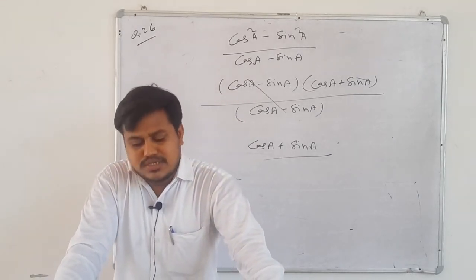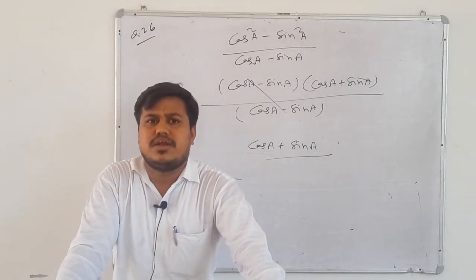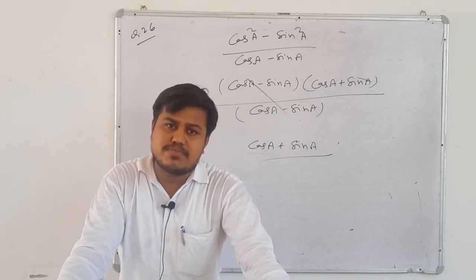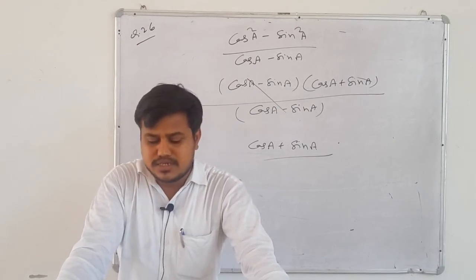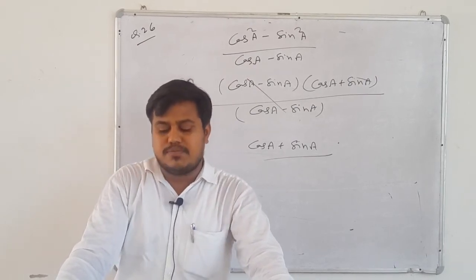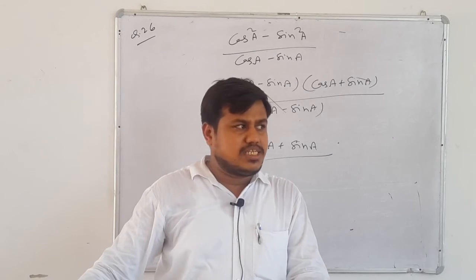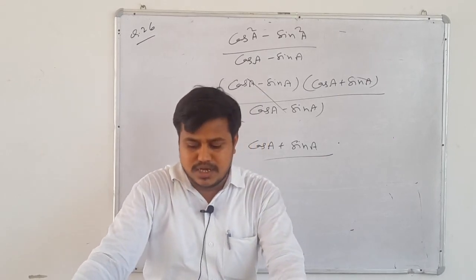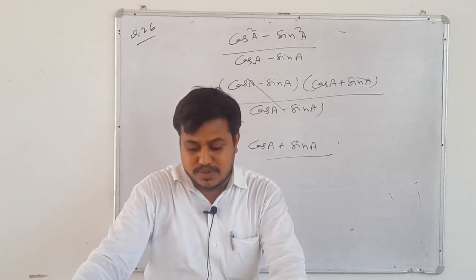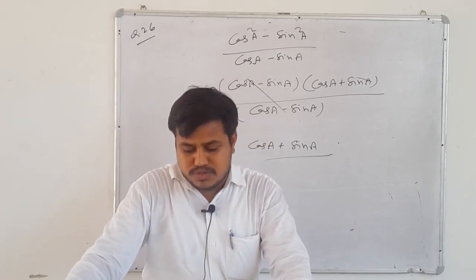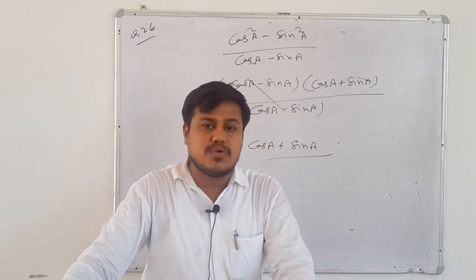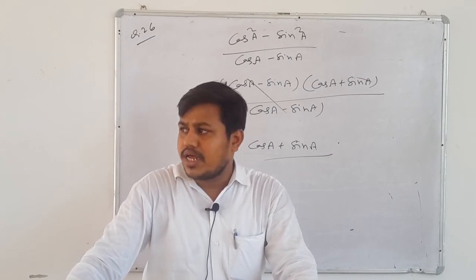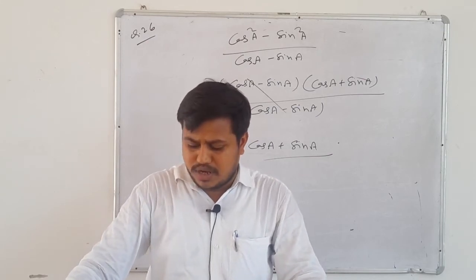Question 27: change to sin/cos. Where cosec is given, write 1/sin; where sec is given, write 1/cos. Then take LCM, apply trigonometric identity, and the question will be solved. Both left hand side and right hand side need to be solved.